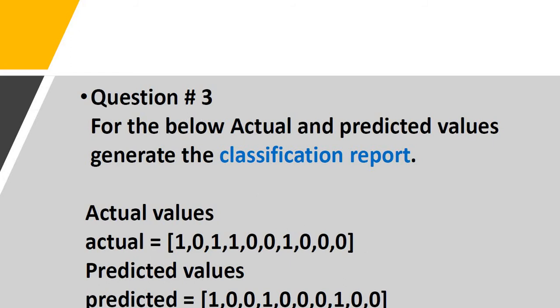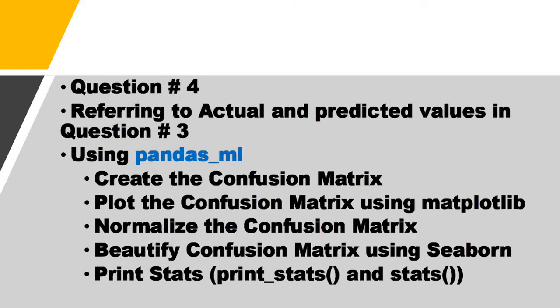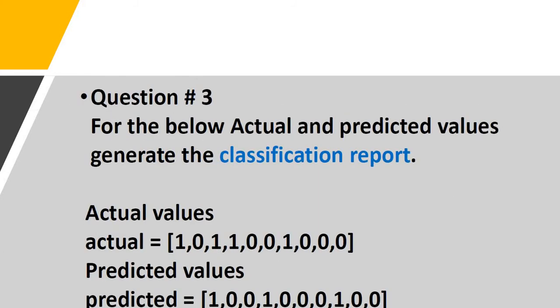The third question is: I have given you a NumPy array of actual and predicted values, and you can use Python scikit-learn and generate the classification report. Following this, you have to use the same array of values.